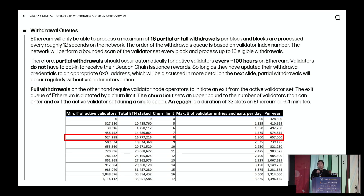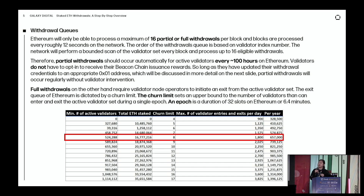Let's talk about the timing for these different types of withdrawals, because it differs between partial and full. Both partial and full withdrawals are going to be part of the same withdrawals queue, and there is a limit to how many withdrawals will be processed every 12 seconds — basically every block. You're going to have a maximum of 16 partial or full withdrawals processed per block. With over 500,000 active validators, it will take about four to five days to process all partial withdrawals because there's only 16 processed per block.